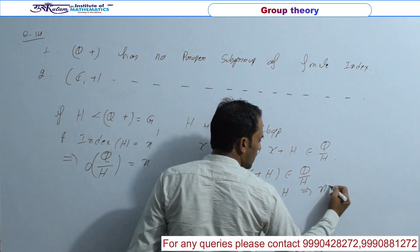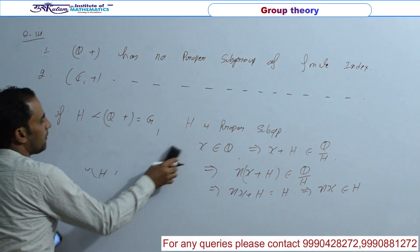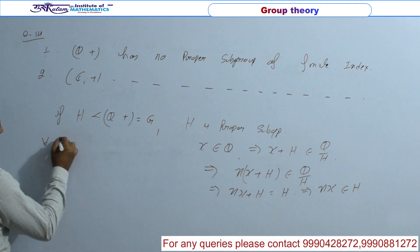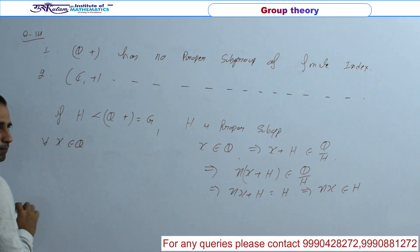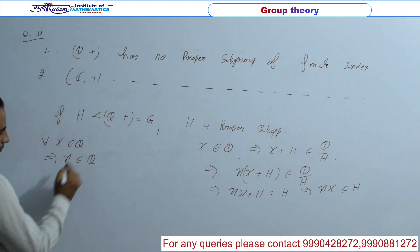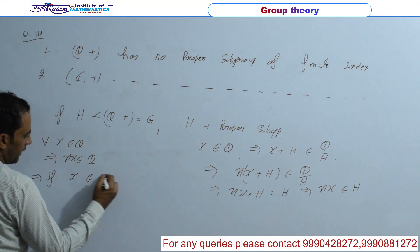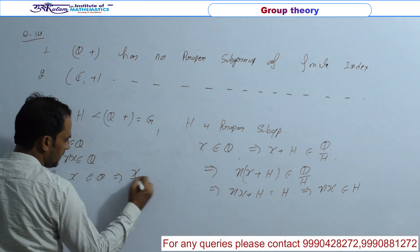तो NX plus H is equal to H. तो this implies N of X belongs to H. तो इस information से हमारे पास क्या proof हुआ? Every X belongs to Q implies N of X belongs to H. तो this implies X by N, say this is Y, also belongs to Q.